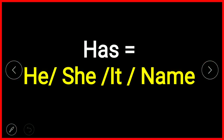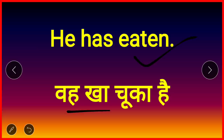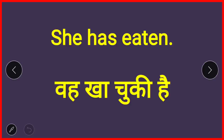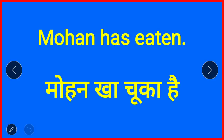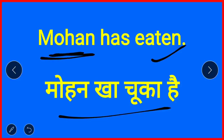With the rest — he, she, it, and names — you use 'has.' 'He has eaten' — voh kha chuka hai / usne kha liya hai. 'She has eaten' — voh kha chuka hai. 'Mohan has eaten' — Mohan kha chuka hai / Mohan ne kha liya hai. With names, 'has' is used — clear hai.